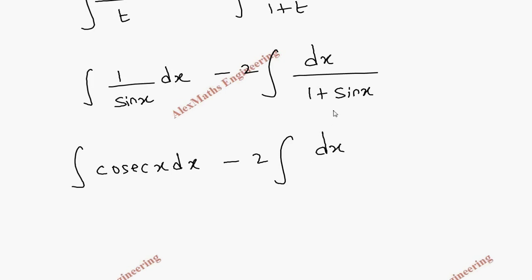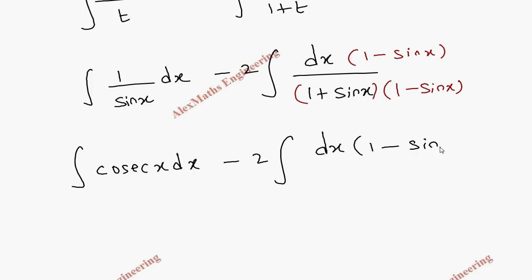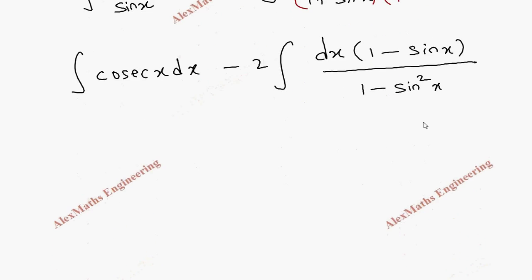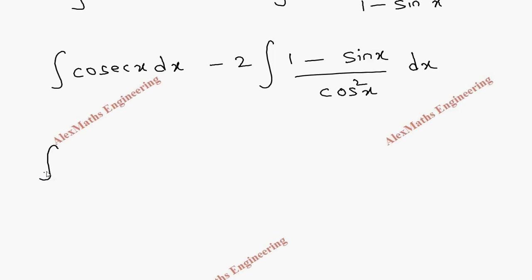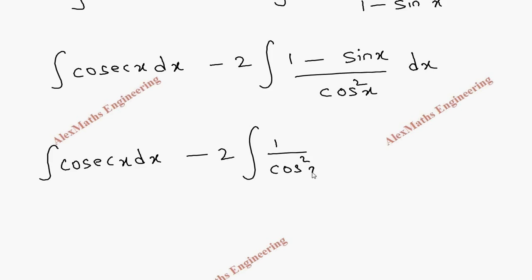For the second integral, we multiply numerator and denominator by the conjugate (1 minus sin x). The denominator becomes 1 minus sin squared x, which equals cos squared x using the identity (a+b)(a-b). Dividing individually, the first part gives sec squared x and the second gives sin x over cos x times 1 over cos x, which we can write as sec x tan x.